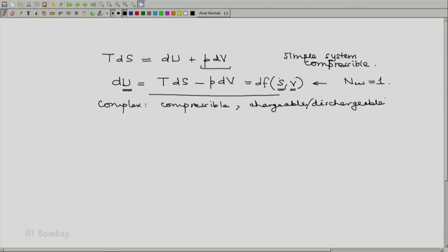So here the number of two-way work modes is two. And the basic property relation will now reflect the second work mode also. So this will be dU plus PdV plus EdQ, where E is the potential and Q is the charge. Again turning it around, we will say dU equals TdS minus PdV minus EdQ.